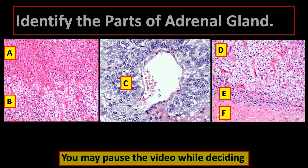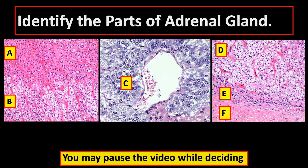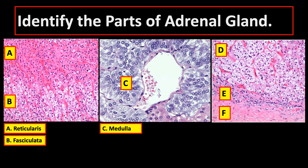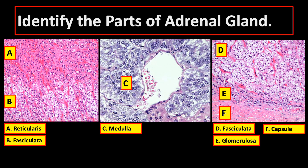Now let's try to identify some structures. Identify the parts of the adrenal gland. If you answered zona reticularis for A, zona fasciculata for B, adrenal medulla for C, zona fasciculata for D, zona glomerulosa for E, and capsule for F, then you got everything right.